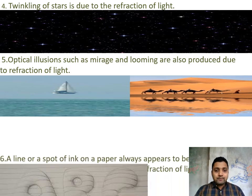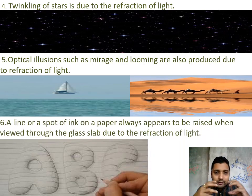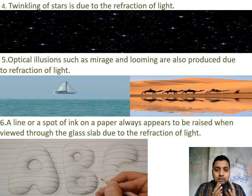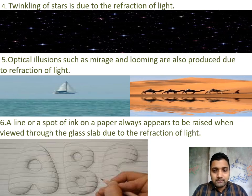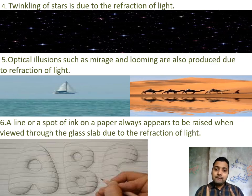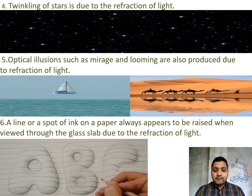This concludes our discussion on refraction through a triangular prism and applications of refraction. In the next part, we will discuss total internal reflection — when a ray of light passes from a denser to a rarer medium but reflection takes place instead of refraction. Subscribe to my channel to get more updates, and like the video if you found it useful. Thank you.